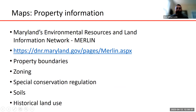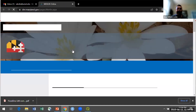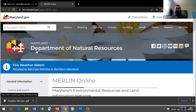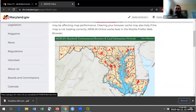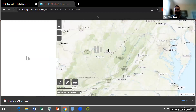One good resource especially for Maryland is Maryland's Environmental Resources and Land Information Network, or MERLIN, run by DNR. It includes property boundaries for different parcels, zoning information, special conservation regulations depending on where the property is, rudimentary soil information, and historical land use. It's an interactive web application — basically a GIS mapping interface.